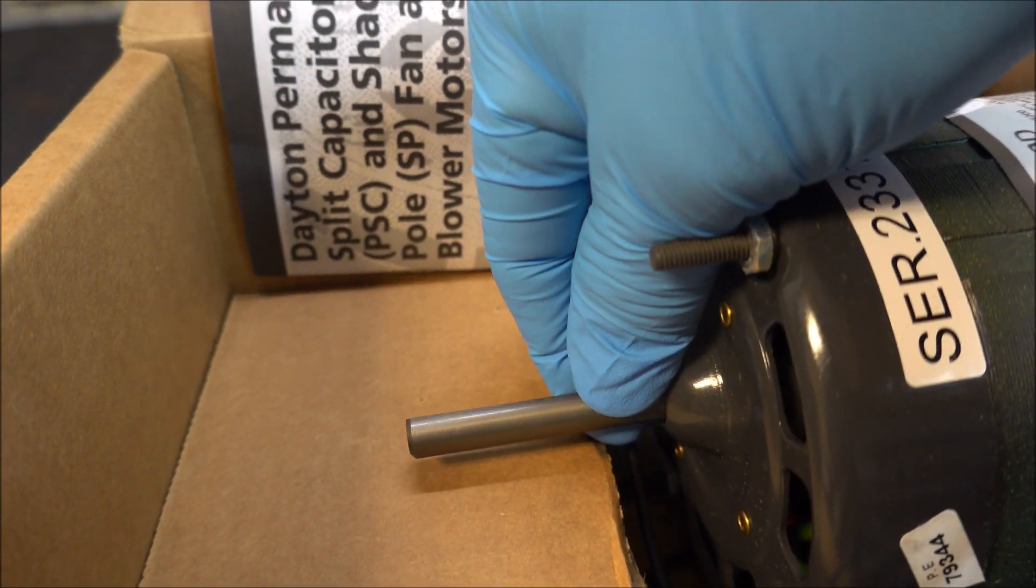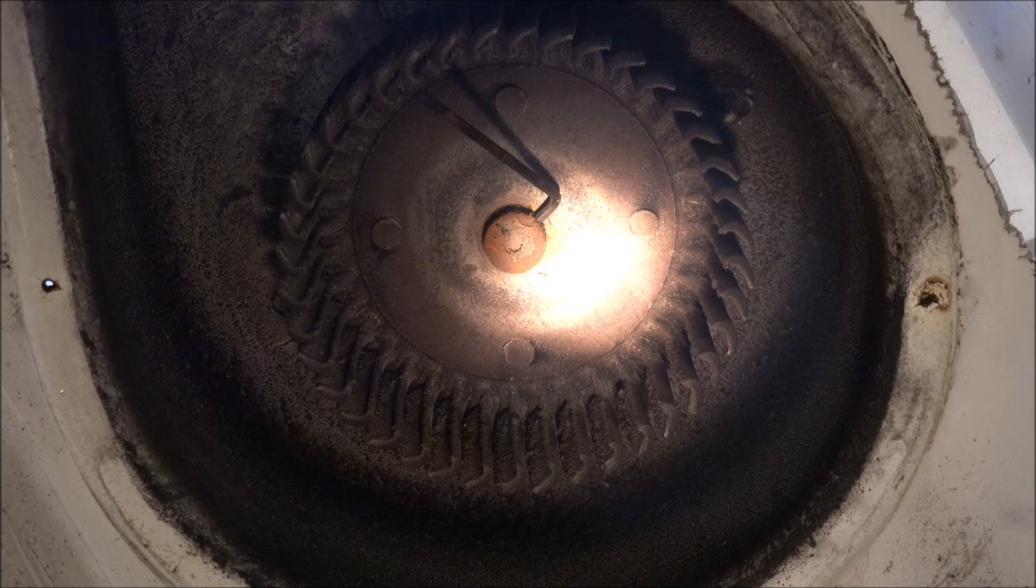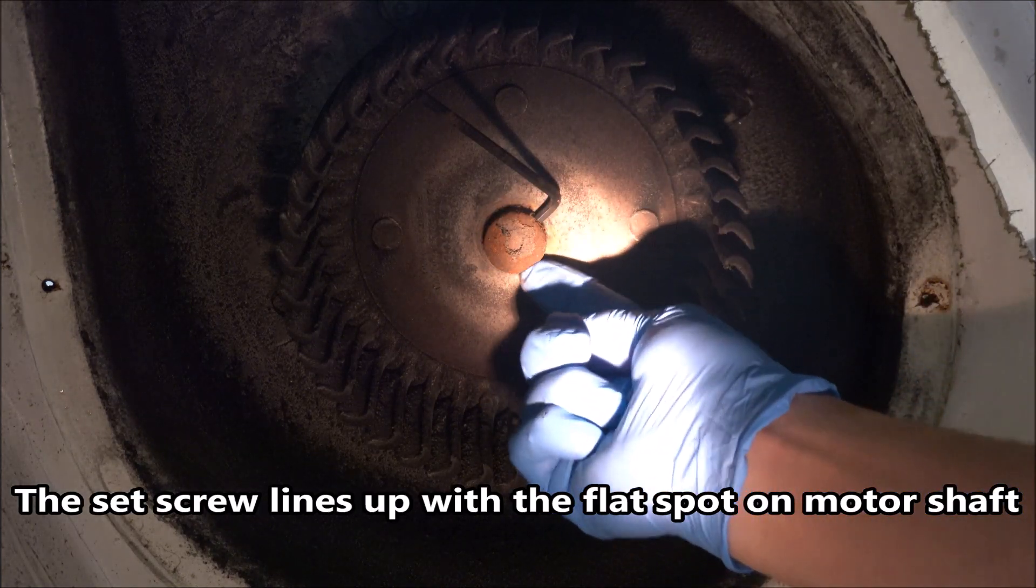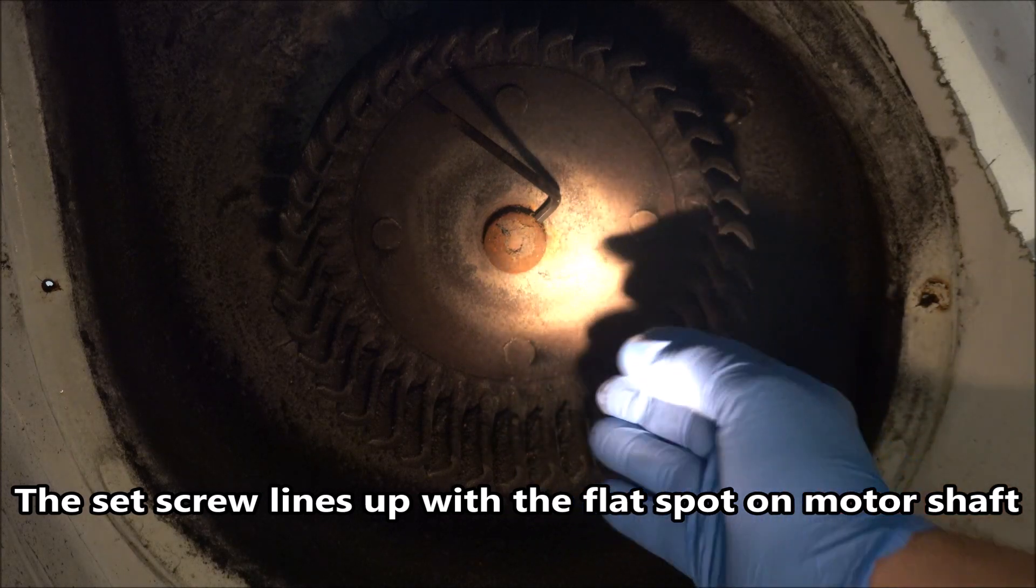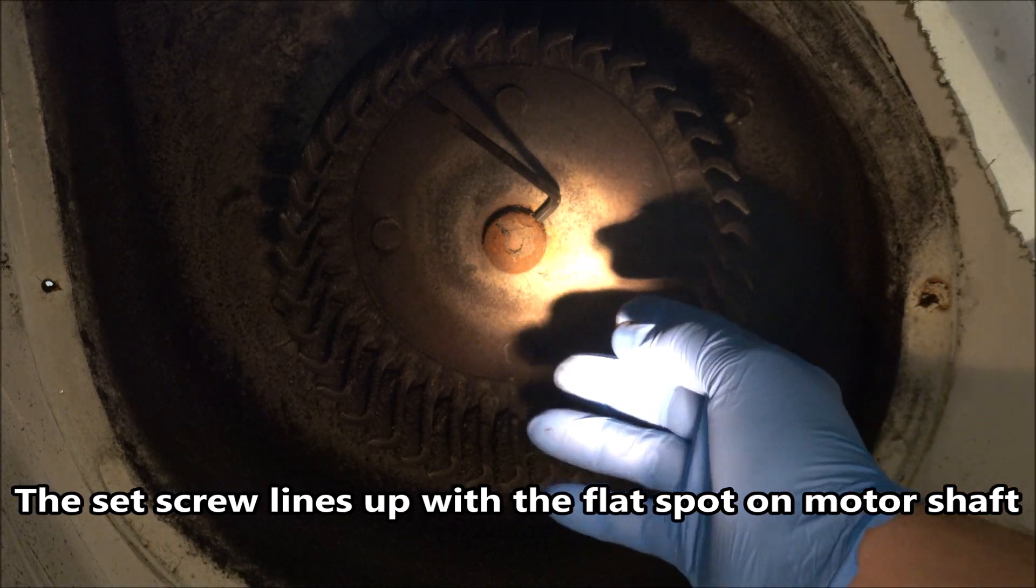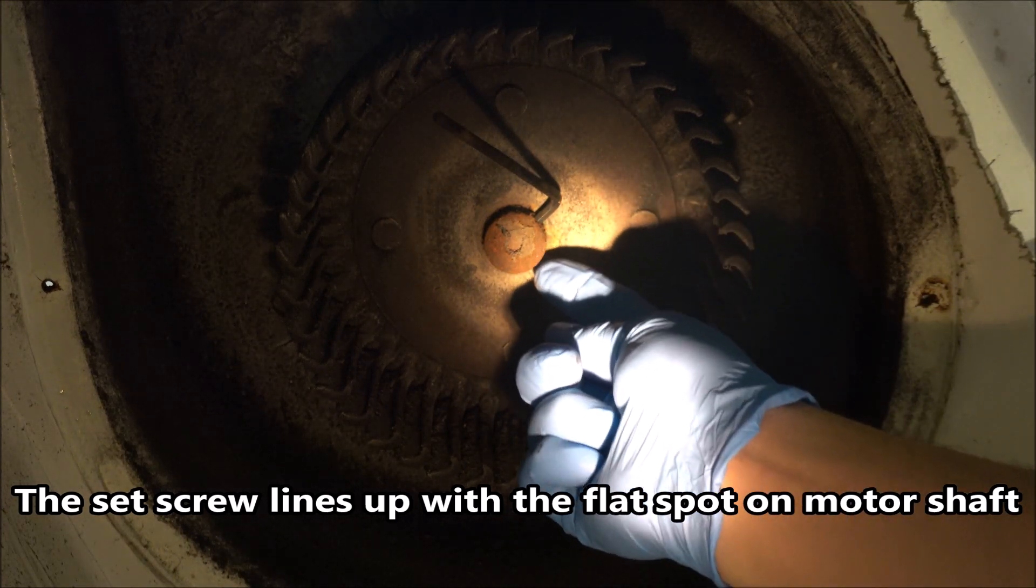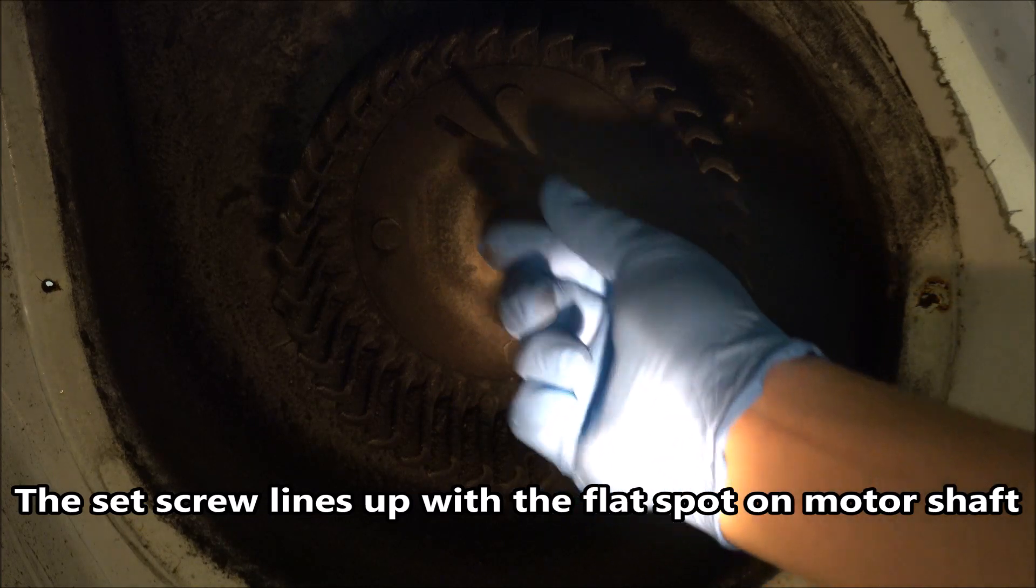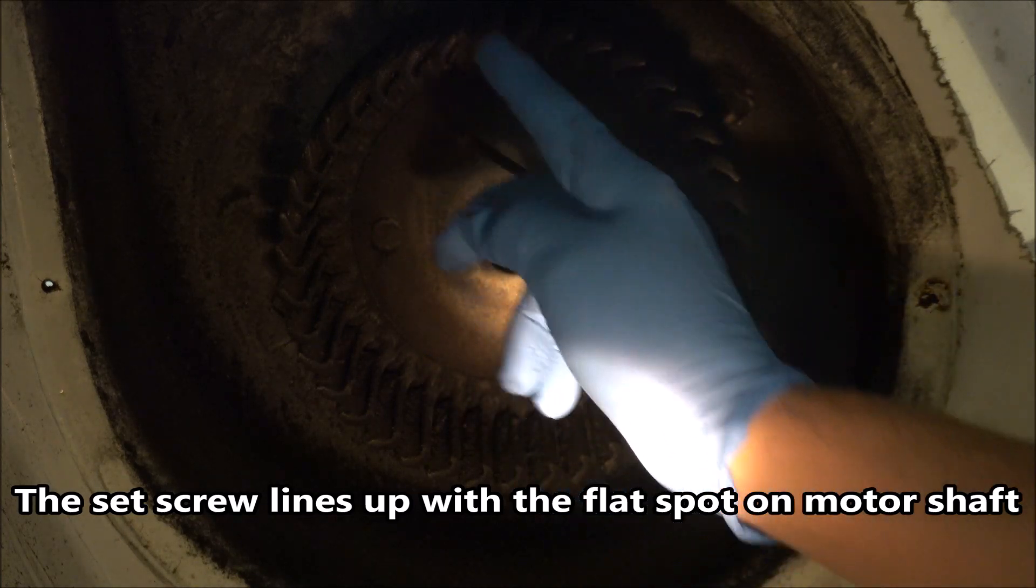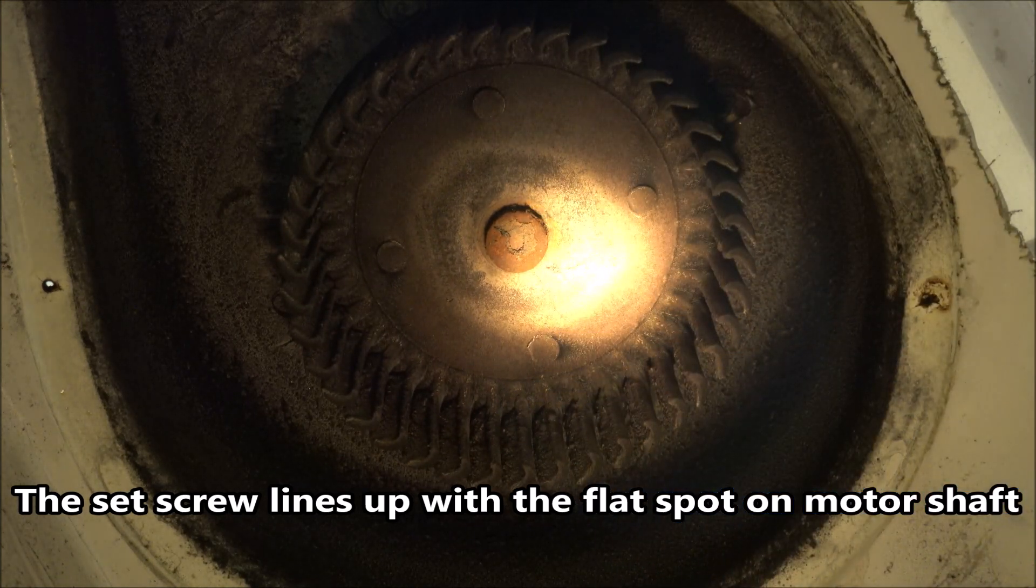I want to show you that there's a flat spot on that shaft there. There's a set screw on this steel part of the hub here. The first time I took this apart to replace this motor, this is about the third time I've done this, the first time I did it I had to put some heat on this to get that set screw to come loose. This is already loose now because I put anti-seize on it the last time I did this.